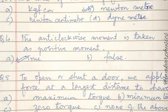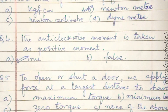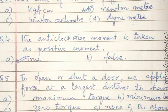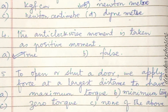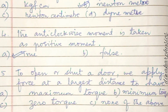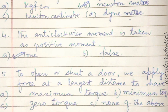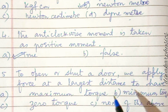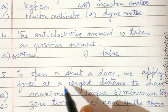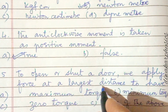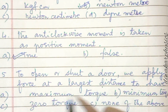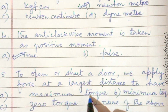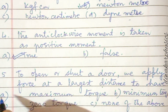Question five: to open or shut a door we apply force at the largest distance — to have maximum torque, minimum torque, zero torque, or none of the above? Torque equals force into distance. When we apply force at the largest distance, torque will be maximum with the given force. So the answer is maximum torque.